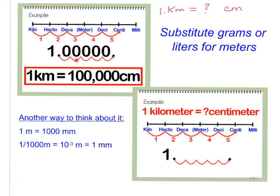And when I do that, one, two, three, four, five. I need to put zeros in there for placeholders. This is the number I get. One kilometer equals 100,000 centimeters. I can substitute liters for meters, I can substitute grams for meters, and it works the same way.